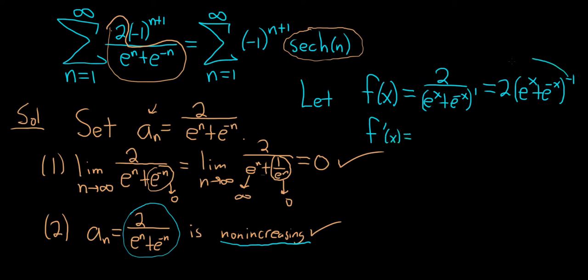So f prime of x is equal to, you take this negative and put it in the front. So you get negative 2 parentheses e to the x plus e to the negative x, and then minus 2 subtract 1 times the derivative of the inside. So the derivative of e to the x is e to the x. The derivative of e to the negative x is e to the negative x, and then times the derivative of negative x, so negative 1. So it's another chain rule.